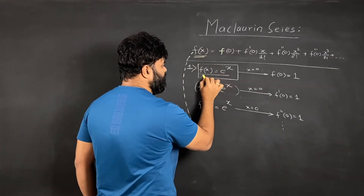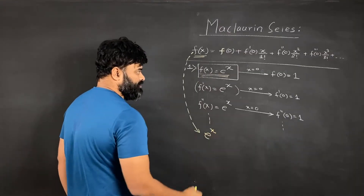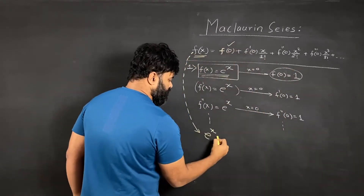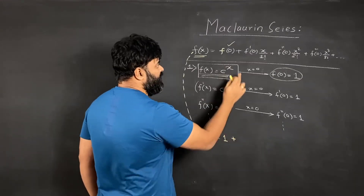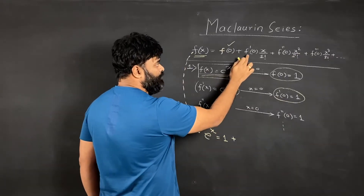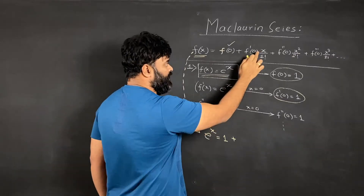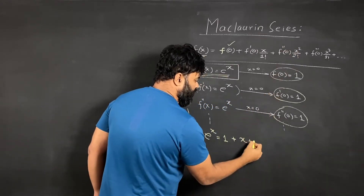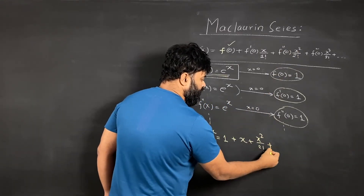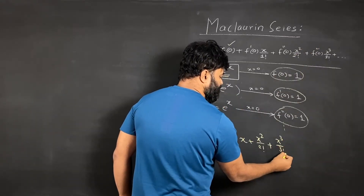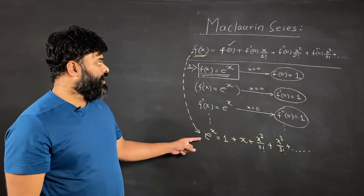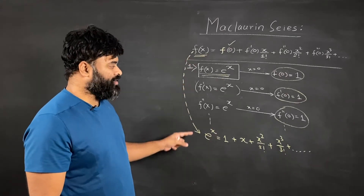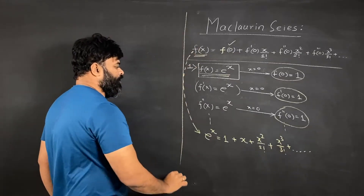Since f of x is e raised to x, I replace that here. f of 0 is 1, so the first term is 1. f dash of 0 is also 1, so the next term is x over 1 factorial, giving x. Then f double dash of 0 is 1, giving x squared over 2 factorial, and the next term is x cubed over 3 factorial, and so on. This is the power series of e raised to x — a very simple example of how to use the Maclaurin series to find a power series.